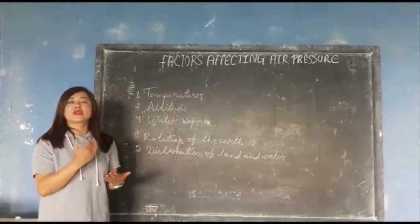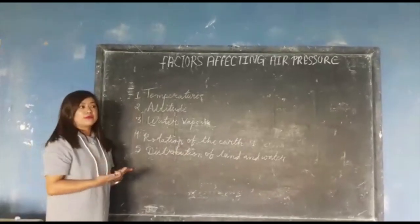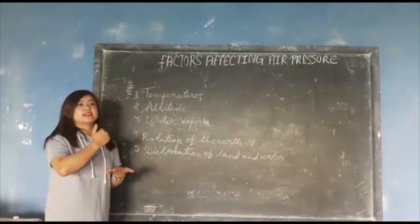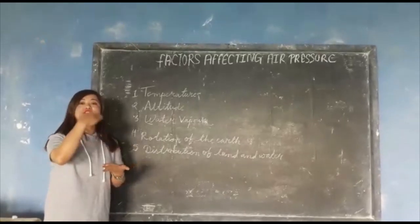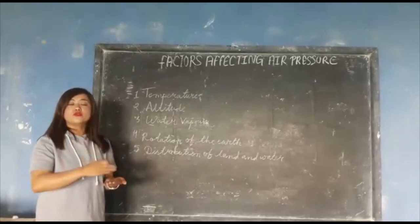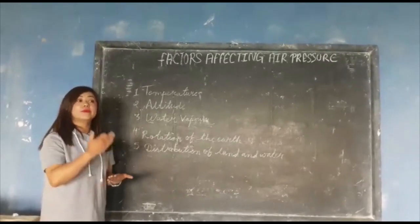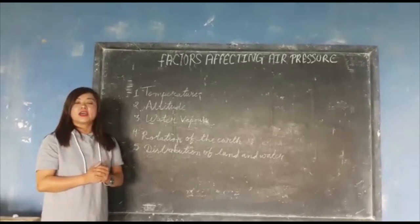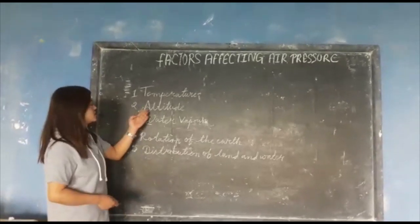There is an inverse relationship between air pressure and temperature. As temperature increases, there would be low pressure. As temperature decreases, there would be high pressure. Therefore, in warmer regions there would be low pressure, but in cold regions there would be high pressure. The second factor is altitude.